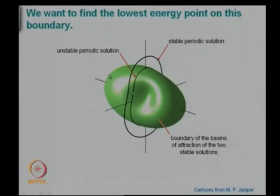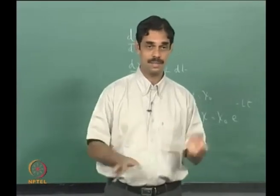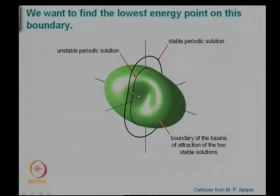The question is whether the boundary is like a football — round — or is it distorted. From this picture you can imagine I am hinting at a distorted boundary. Let us say you have this limit cycle, and this is the lowest energy point of the unstable periodic solution. Do you have to hit the system with at least that much energy, or can this dimple be such that you can even have lower energy and still reach the limit cycle?